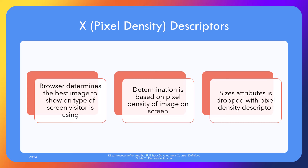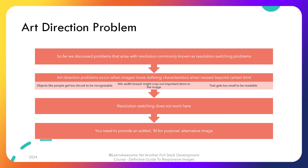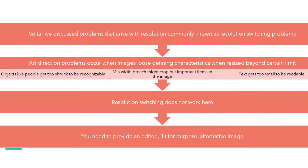Moving on from the x descriptor now. So far our discussion has been about making images look sharp in different width and resolution devices and preventing blurriness or pixelation — basically the resolution switching problem. There's another related and equally important issue which is that of art direction. Consider a panoramic shot of a bird sitting on a tree to the right of the image. The image is wide enough to fit a high-res display, but suddenly the user switches to portrait mode and the image is cropped. The bird, which was the center of attraction, gets cropped out.